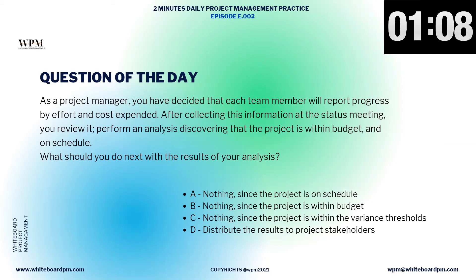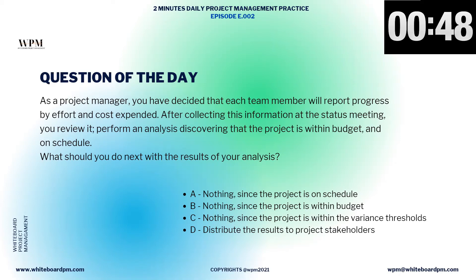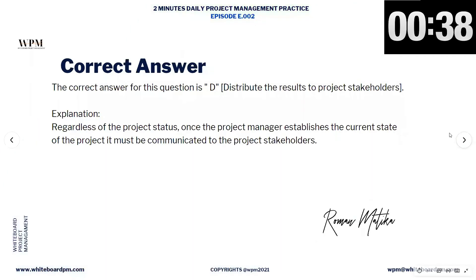So it's clear the project is within budget and on schedule. For you as a project manager, options A, B, and C are not correct because you should not do nothing. As a project manager, you should always distribute the results to the project stakeholders, either when the results are above budget or behind schedule. So the correct answer for this question is D: Distribute the results to project stakeholders.